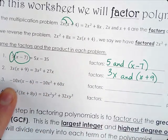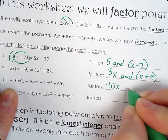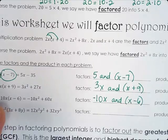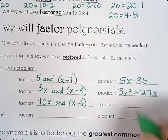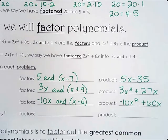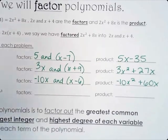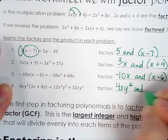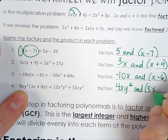The next one: the factors are −10x and (x − 6), and the product is −10x squared + 60x. Then the last one: our factors are 4xy squared — because that is being multiplied by the other term, (3x + 8y).